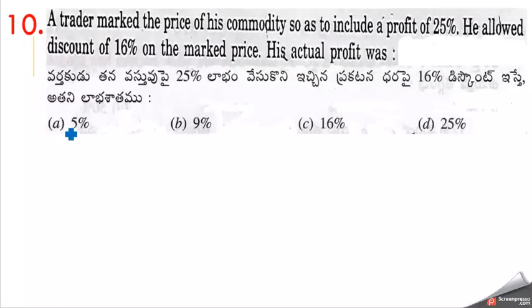Next, last question. A trader marked the price of his commodity so as to include a profit of 25%. He allowed a discount of 16% on the marked price. His actual profit was?